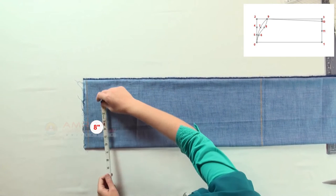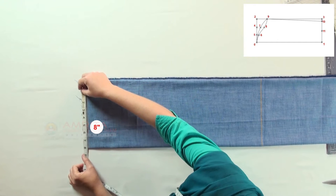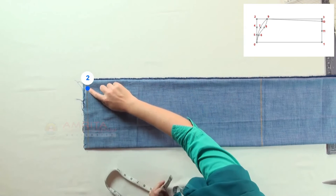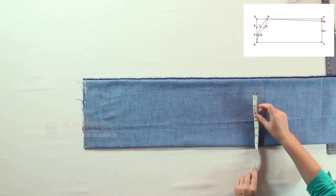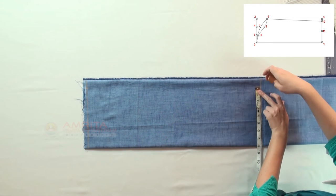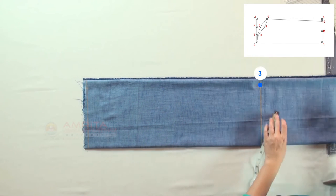From point zero, measure eight inches and make a mark. This is point two. Again from point one, measure eight inches and make a mark. This is point three.